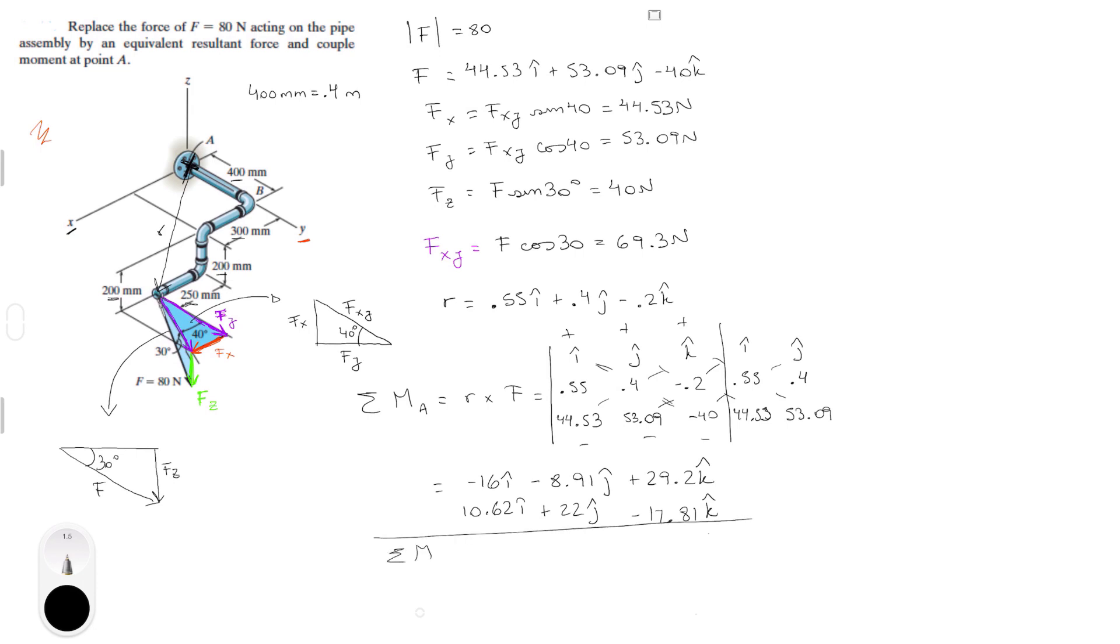Add them together. And we're going to get that the sum of the moments around A is equal to minus 5.38 in the i plus 13.09 in the j plus 11.39 in the k. Now you know that the force is in newtons and the distance is in meters, because remember I converted to meters. So newton meters.